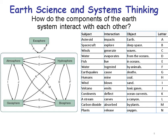In G, earthquakes cause deaths — the geosphere interacts with the biosphere. In H, humans mine coal — the biosphere interacts with the geosphere. You start to see why it's important to think in terms of subject and object, because something is interacting with something else, and that gives you the direction of the arrow. In I, wind blows sand — the atmosphere interacts with the geosphere. In J, volcanoes emit toxic gases — the geosphere interacts with the atmosphere. In K, continents deflect ocean currents — the geosphere interacts with the hydrosphere. In L, a stream carves a canyon — the hydrosphere interacts with the geosphere.